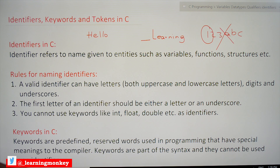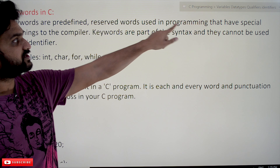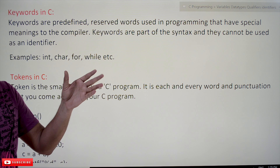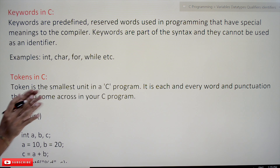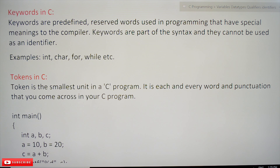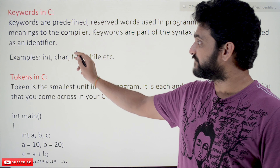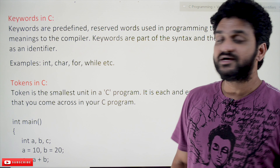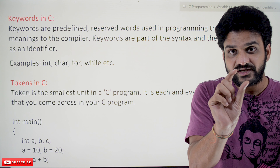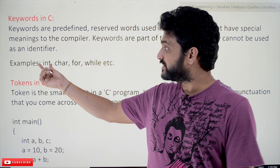Next is keywords in C. Keywords are predefined or reserved words used in programming that have special meaning to the compiler. Keywords are part of the syntax and they cannot be used as an identifier. Examples include: int, char, for, while. We have seen 'int' — it is a keyword, so it cannot be used as a variable name. That is very important to understand about keywords.